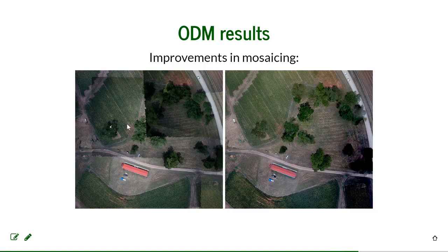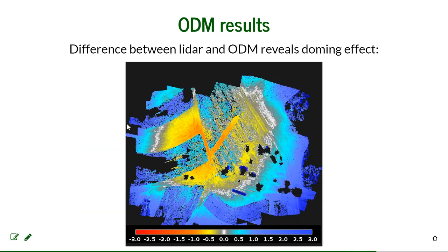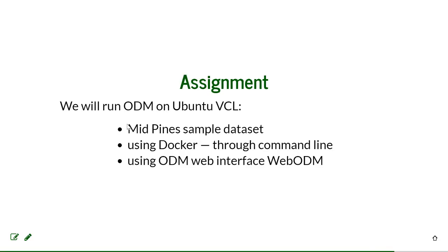This shows some of the improvements — for example, about two years ago they improved the mosaicing by incorporating a newer open source library that handles it better. The doming effect shown here is an older picture; it's slightly better now but I didn't replace it because the improvement wasn't that significant. For the assignment, we will run Ubuntu on VCL and run OpenDroneMap on it with the Medina sample dataset, using Docker.